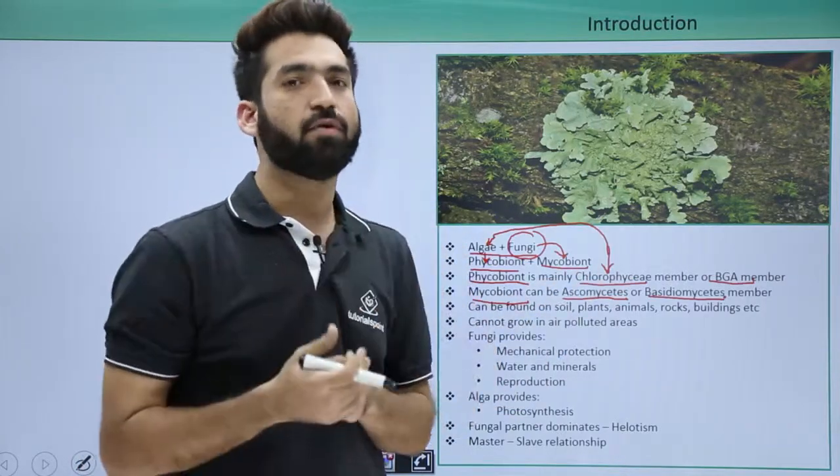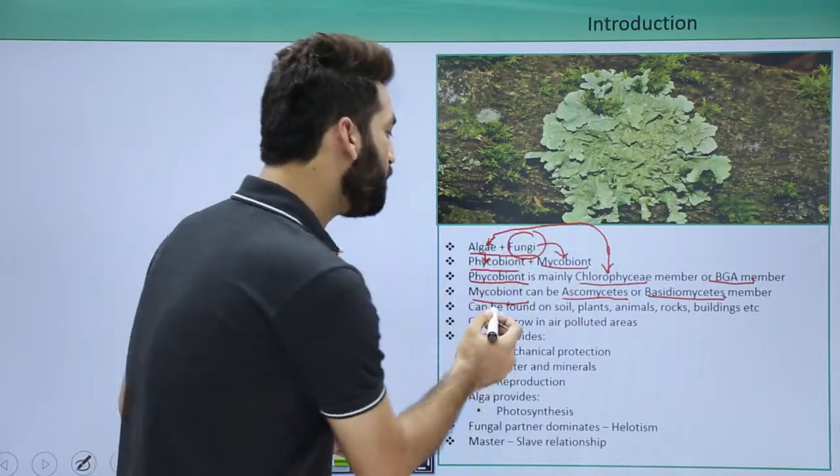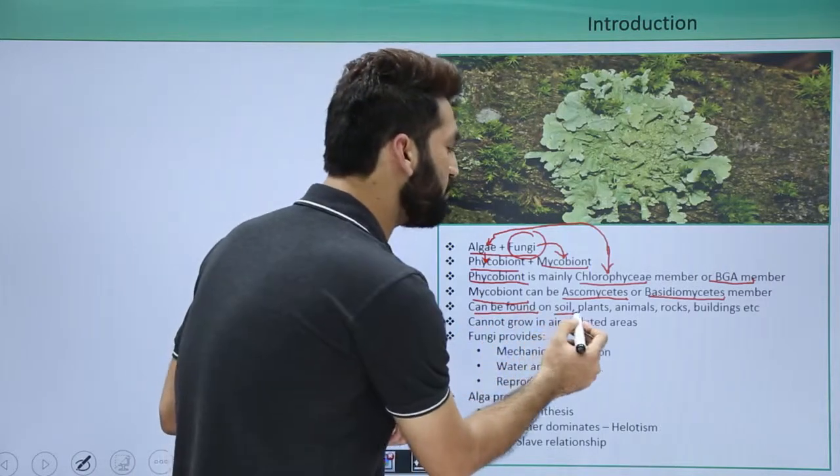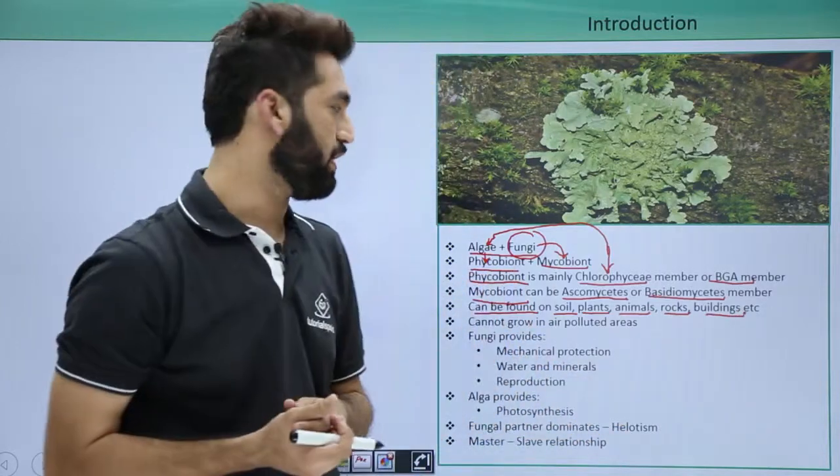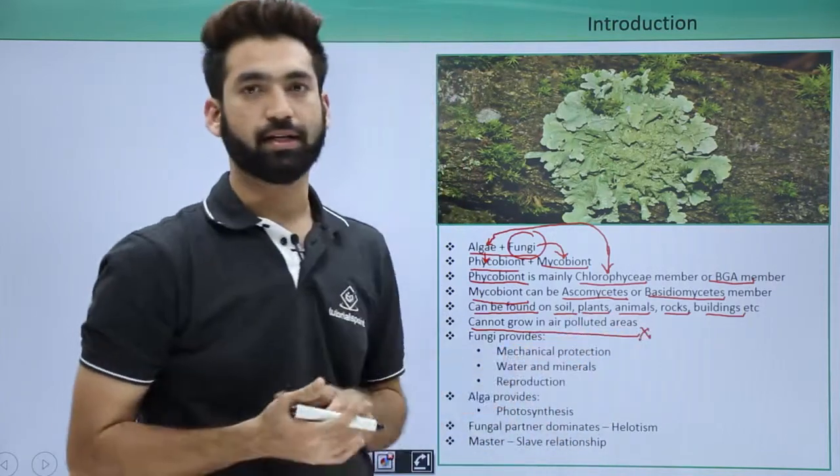So depending upon what the fungal partner is present, that name of the lichen will be given accordingly. Now when you find the particular lichen, their habitat can be found on soil, they can be found on plants, animals, rocks, buildings, etc. But they cannot grow in air polluted areas, very important thing.